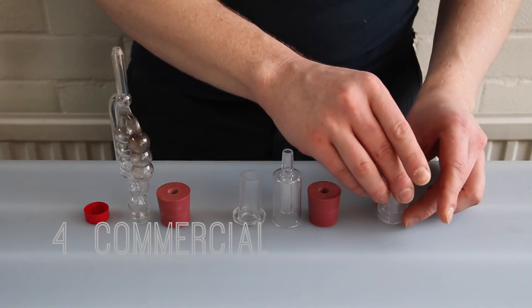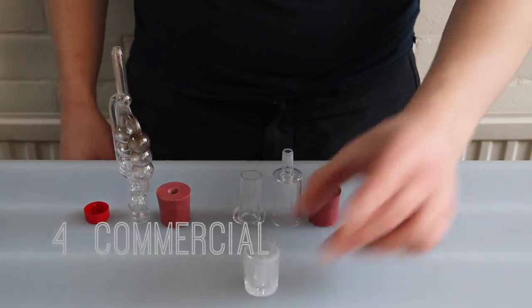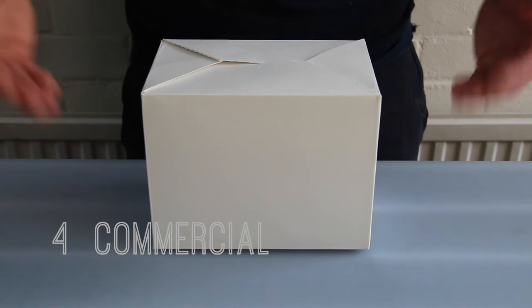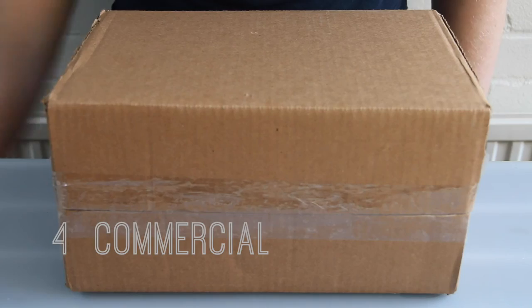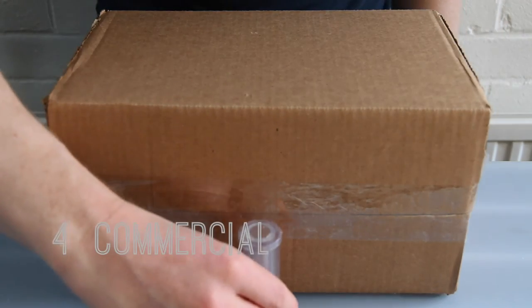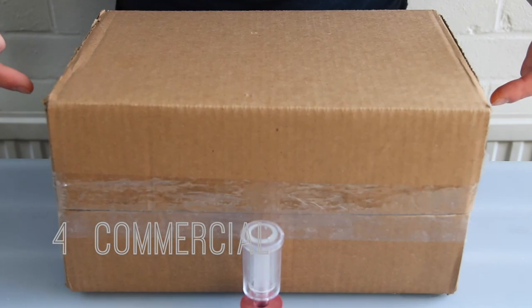Because Block is compact and lightweight, further costs are saved in transport and packaging. This box can hold 100 blocks, and weighs just over 1.5kg. The equivalent number of these requires a box this big, and weighs three times as much.